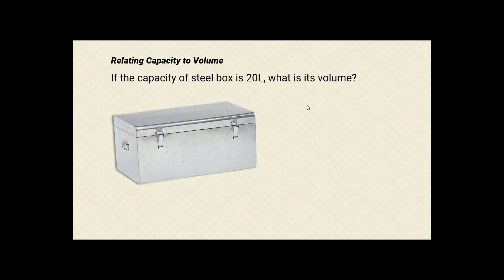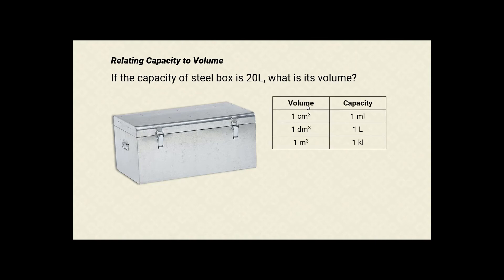Now let us look at relating capacity to volume. If this box has a capacity of 20 liters, what is the volume? We are relating capacity to volume, so we will look at the liter row. As you can see, 1 cubic decimeter is equal to 1 liter, which also means 1 liter is equal to 1 cubic decimeter. Therefore, 20 liters is equal to 20 cubic decimeters.